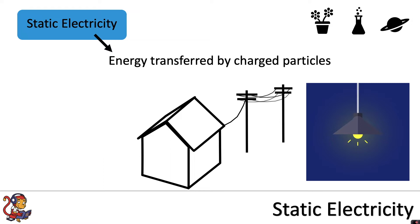In this type of electricity the charged particles move through a conductor. So metals are good conductors, so our wires are made out of metals and the charged particles move through the metal wires.